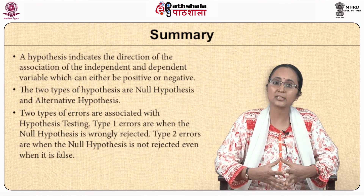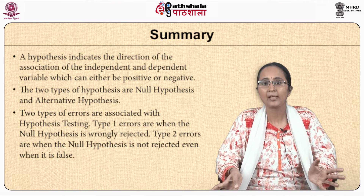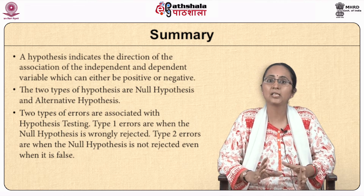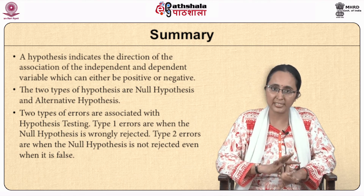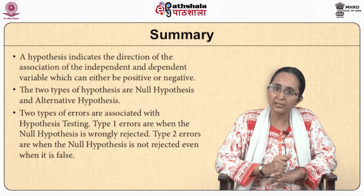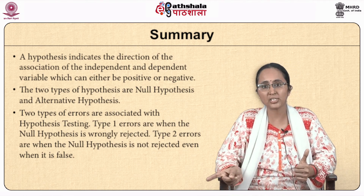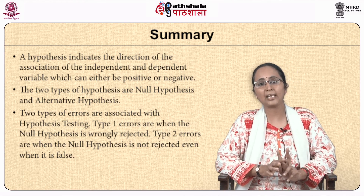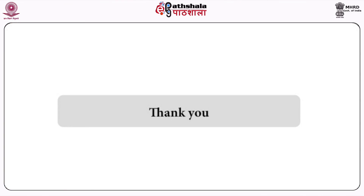The hypothesis indicates the direction of association or relationship between independent and dependent variables — either positive or negative. There are two types of hypothesis: null hypothesis and alternative hypothesis. And there are two types of errors: Type 1 error, which happens when the null hypothesis is wrongly rejected, and Type 2 error, which happens when the null hypothesis is not rejected even when it is false. I hope you are now clear on what a hypothesis and a research question are, and how to frame both. Good day.